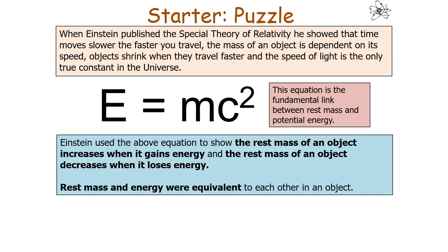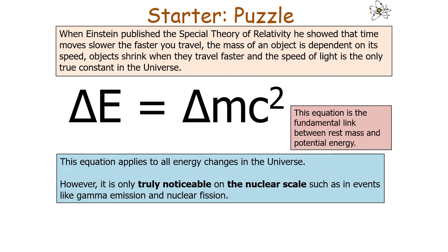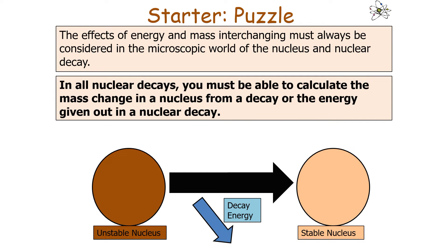The part of the Special Theory of Relativity we're concerned with is Einstein's equation E equals mc squared, which shows that the rest mass of an object increases when it gains energy and decreases when it loses energy. There is a fundamental link between the rest mass of a substance and the energy it possesses — rest mass and energy are equivalent to each other. Einstein realised that mass increase is equivalent to an energy increase, and mass decrease is equivalent to an energy decrease, symbolised with the delta notation. This applies to all energy changes in the universe, but is only truly noticeable on the nuclear scale in events such as gamma emission and nuclear fission.